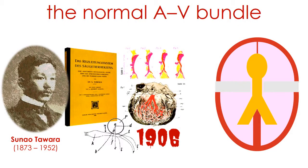Since the publication in 1906 of the work of Sunao Tawara on the conduction system of the mammalian heart, we know that the propagation of electrical impulses from the atria to the ventricles is via an axis formed by the AV node, the bundle of His, and the bundle branches — the right and the left bundle branches — which are connected to the working ventricular myocardium through the Purkinje network.